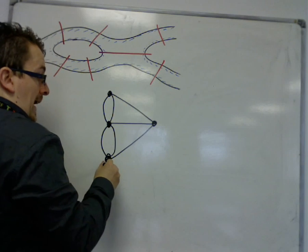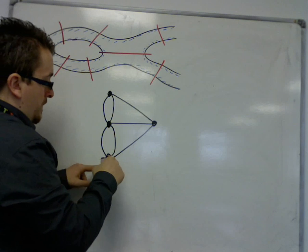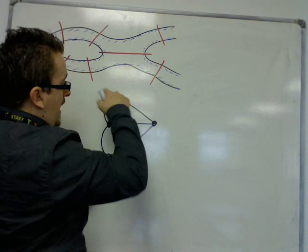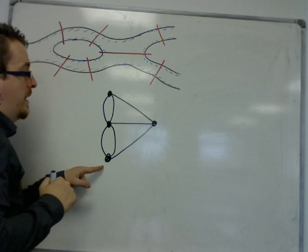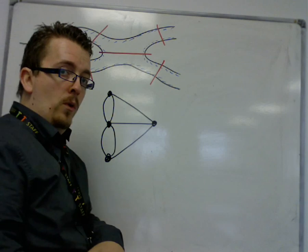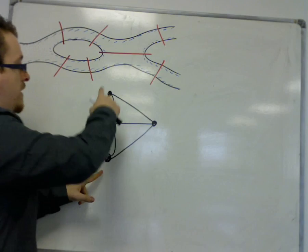Can you start at one vertex, travel along all the edges precisely once, and visit each of the islands?